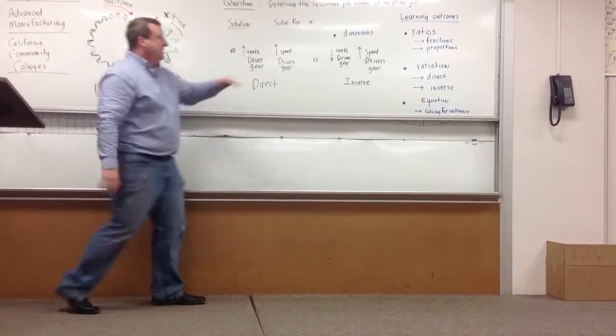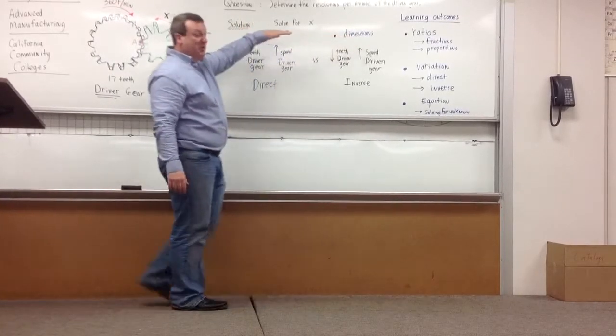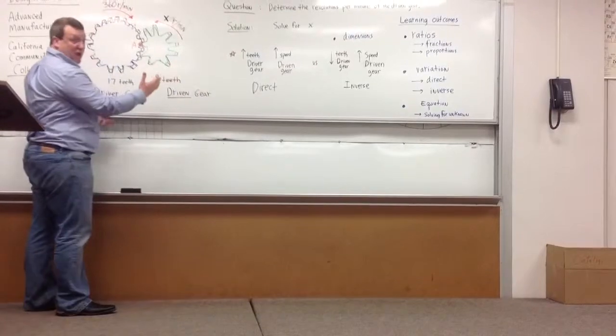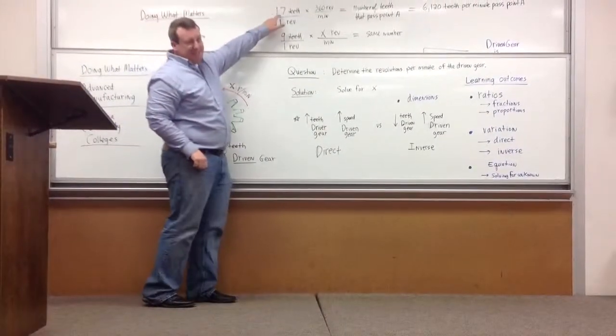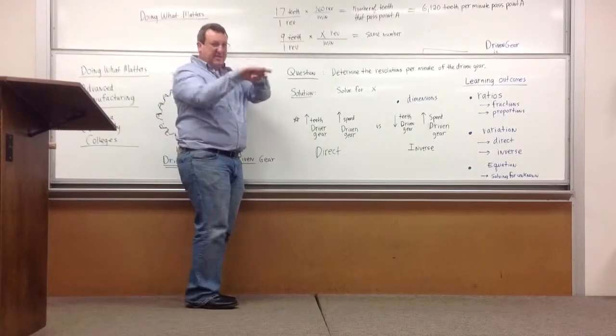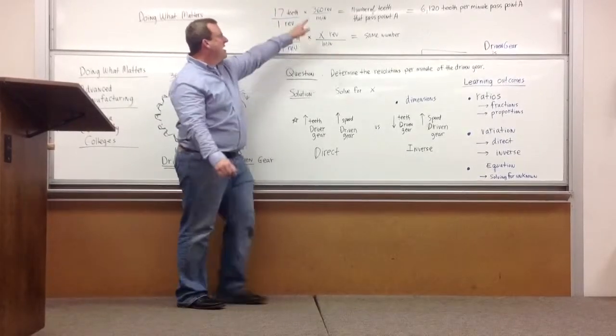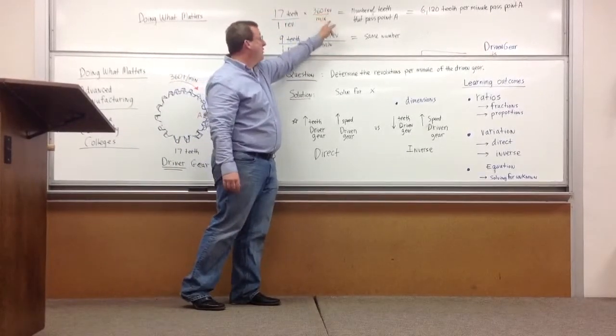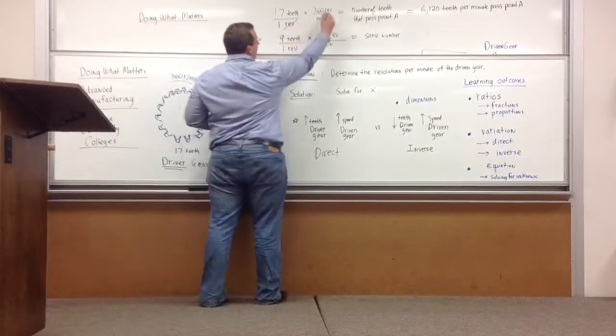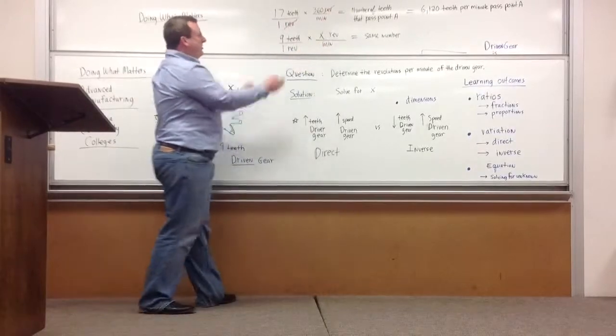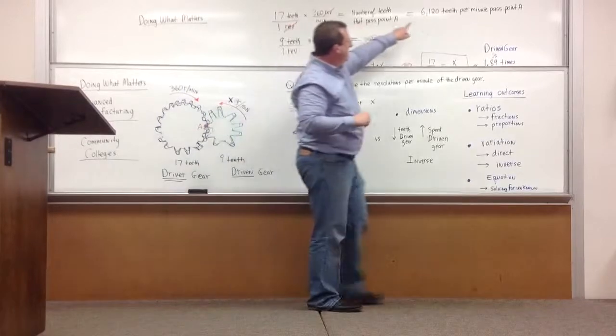The other thing I wanted to talk about is dimensions. Dimensional analysis is a very useful skill. Look over here, I put 17 teeth per, that underlined division is per, like miles per hour, 17 teeth per one revolution, and you have 360 revolutions per minute. If you look at this, you can actually cancel out these units or dimensions, and you end up with teeth per minute left.